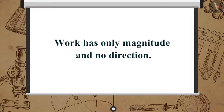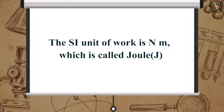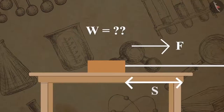Work has only magnitude and no direction. The SI unit of work is Newton meter, which is called Joule. What do you think would be the total amount of work done when force applied is zero, or when the displacement of the object is zero?